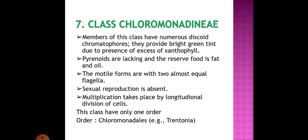Moving on to the seventh class: Chloromonadinae. Members have numerous discoid chromatophores and provide a bright green tint due to the presence of excess xanthophyll. Pyrenoids are absent and the reserve food is in the form of fat and oil. Motile forms have two almost equal flagella. Sexual reproduction is completely absent. Multiplication takes place by longitudinal division of cells. This class has only one order: Chloromonadales, example Vacuolaria.